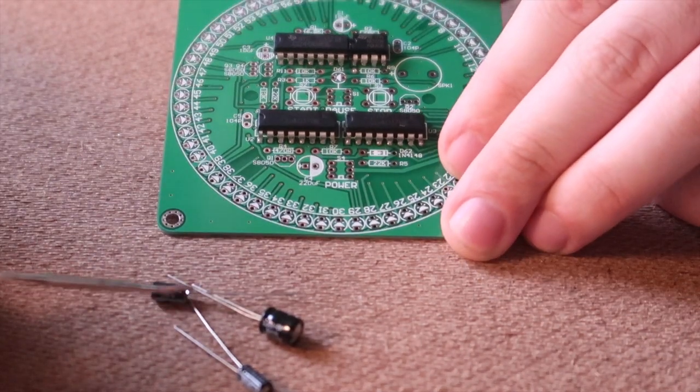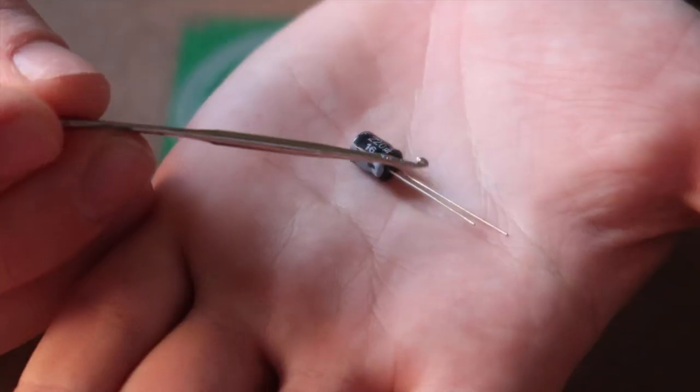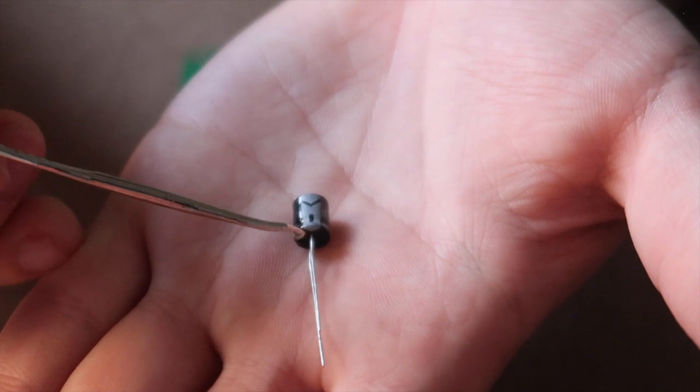Next the electrolytic capacitors, the 10s go here and here and the 220 goes on the bottom. The side that is shorter and also has a gray area here is the negative side.